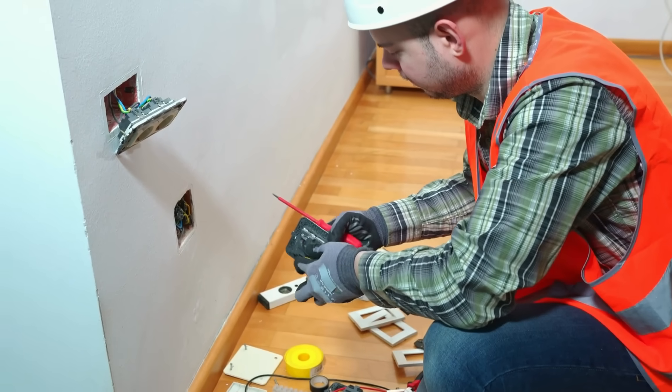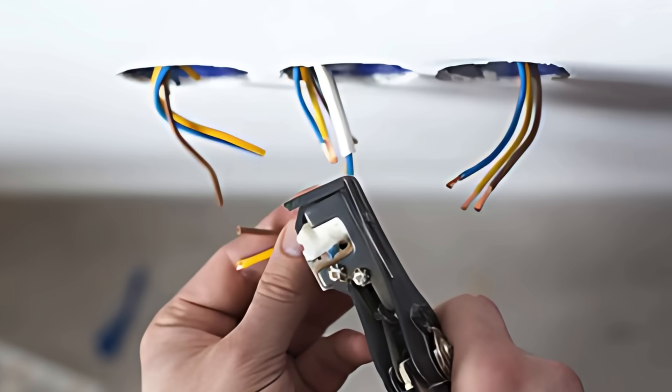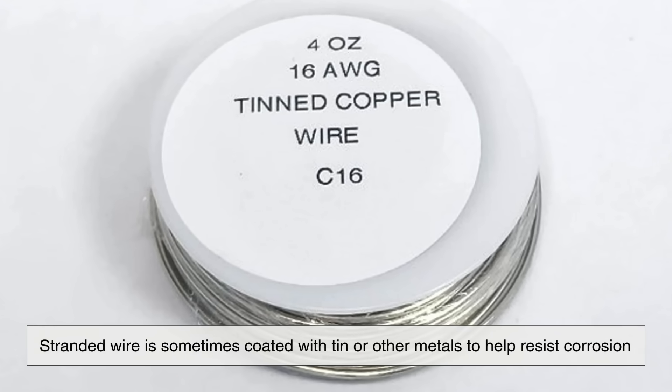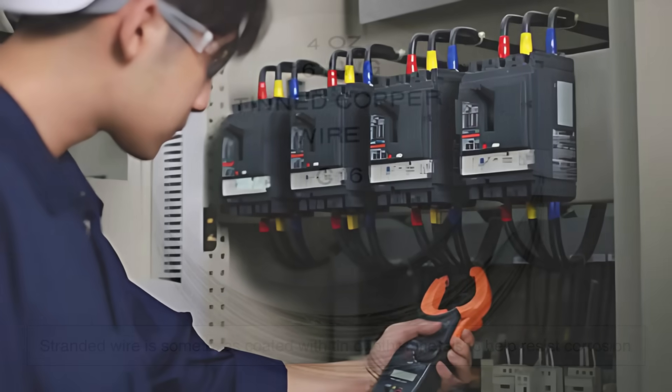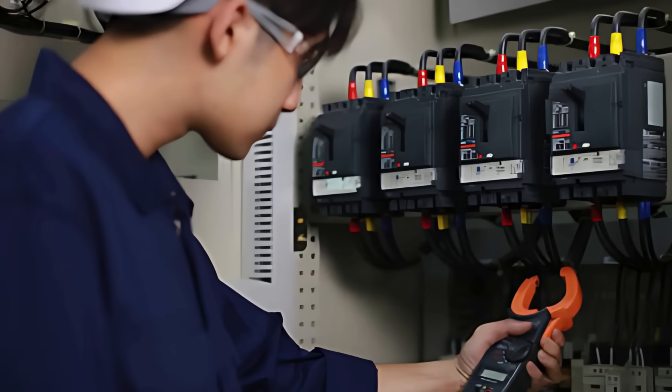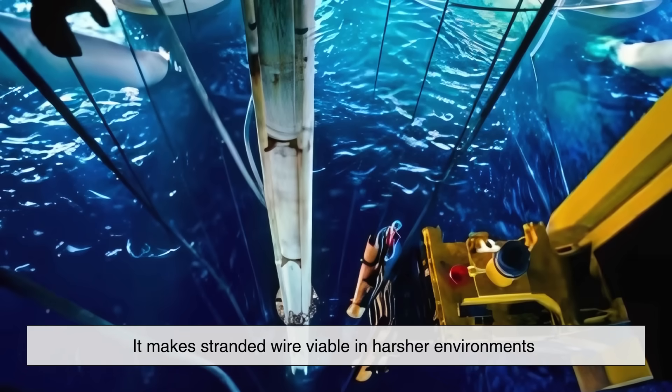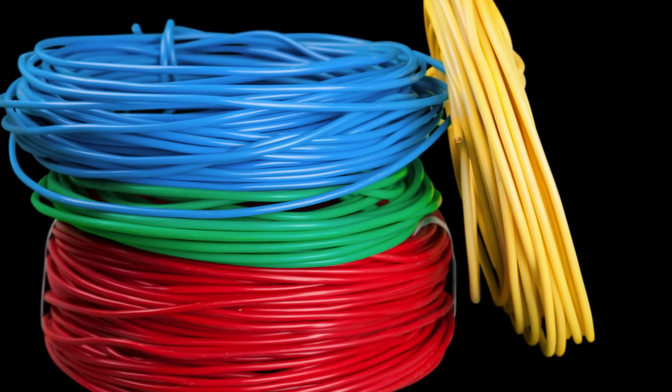But in static environments, like inside walls or underground conduit, solid wire tends to hold up better. Also, stranded wire is sometimes coated with tin or other metals to help resist corrosion, especially in marine applications. That adds to the cost, but it makes stranded wire viable in harsher environments where solid wire might corrode faster.